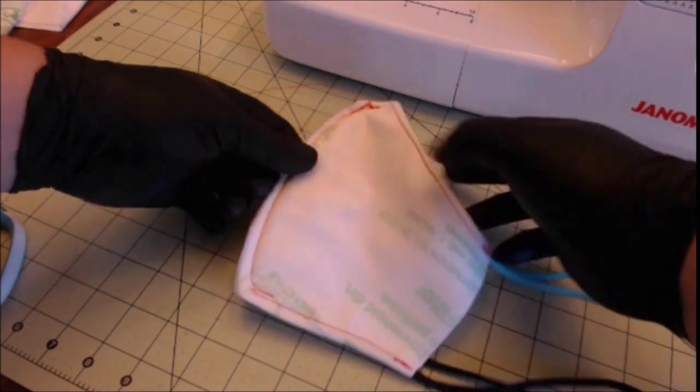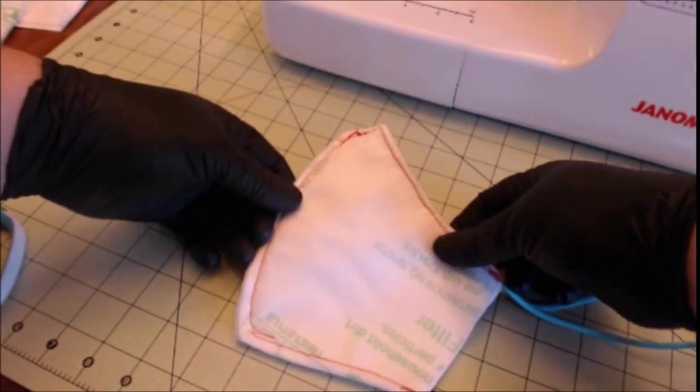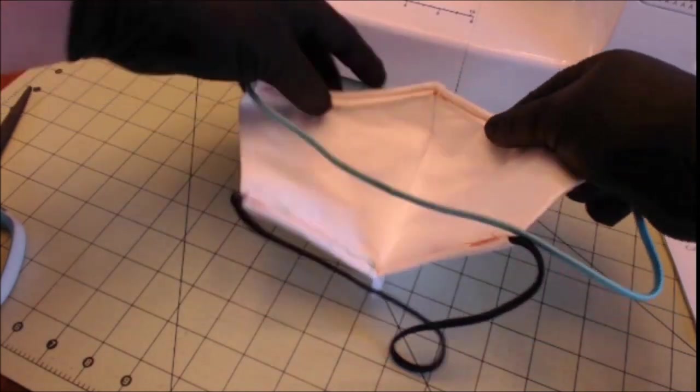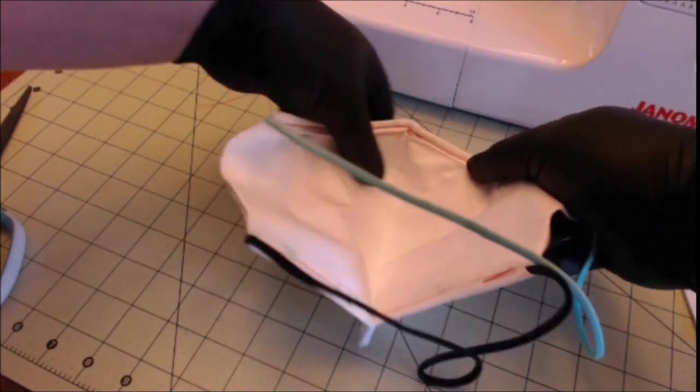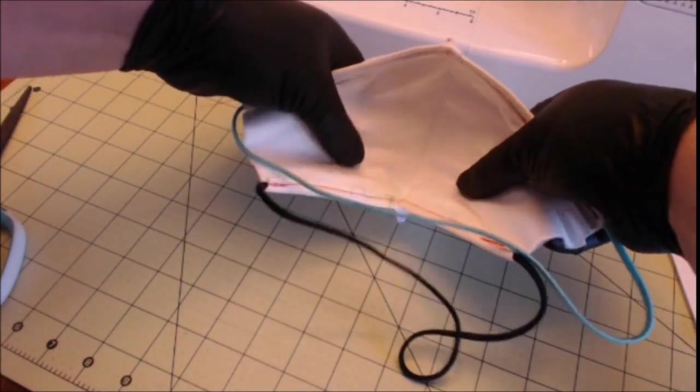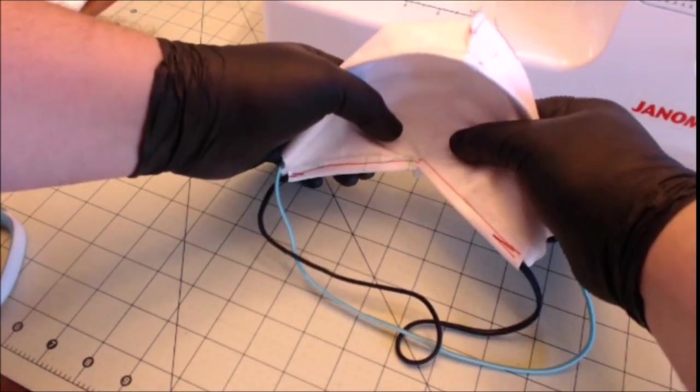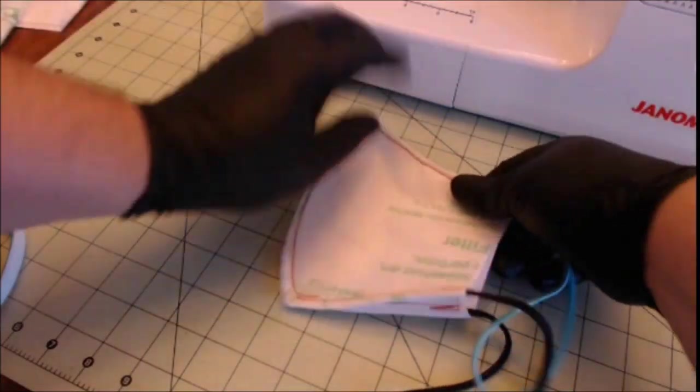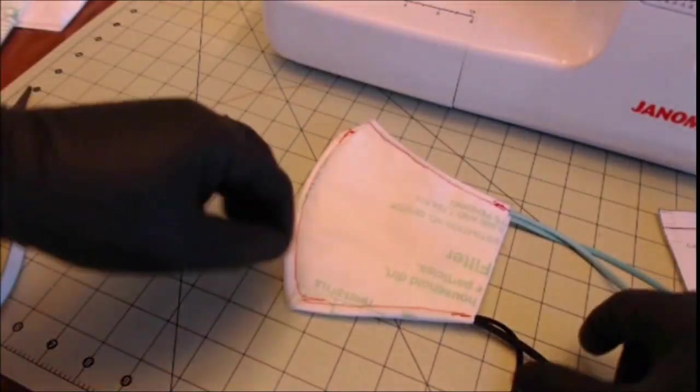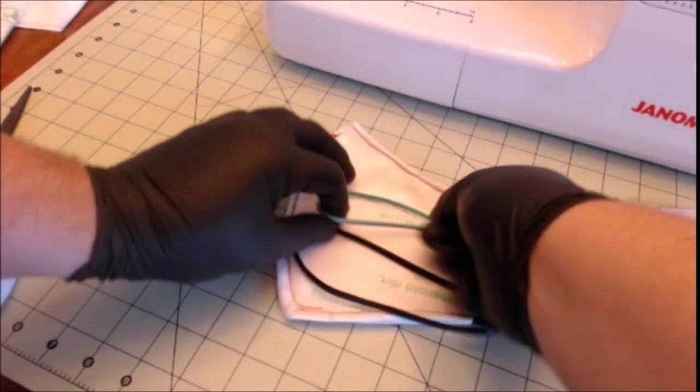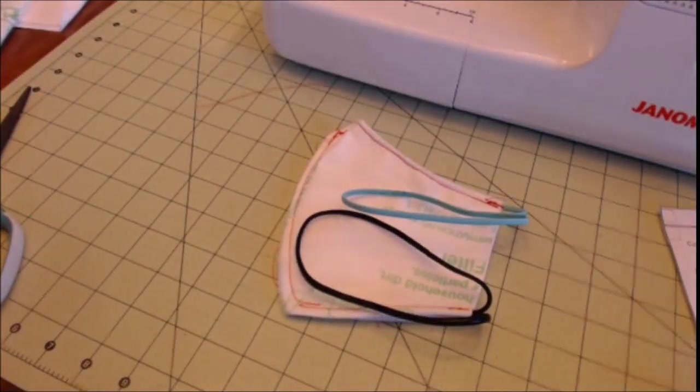And here it is, a completed put together mask ready for use. You can see that it's smooth on the inside. And this is why we leave all the sewing exposed on the outside, so that this side, where it seals against your face, is smooth. Go ahead and put it in a bag, seal it up, and send it off to whoever needs it.